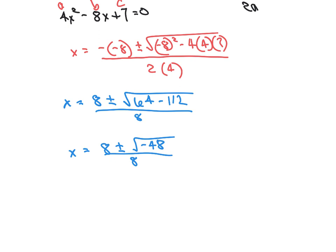So our x equals 8 plus or minus the square root of 64 minus 4 times 4 is 16 times 7 is 112 over 8. So x equals 8 plus or minus 64 minus 112 is negative 48 all over 8. We can factor some things out of here, possibly.